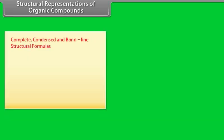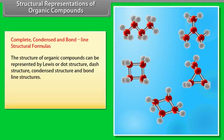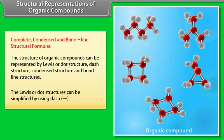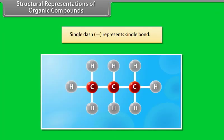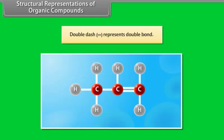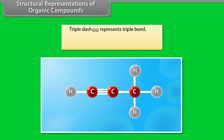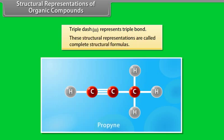Structural representations of organic compounds — complete, condensed, and bond line structural formulas. The structure of organic compounds can be represented by Lewis or dot structure, dash structure, condensed structure, and bond line structures. A single dash represents single bond, for example propane. Double dash represents double bond, for example propene. Triple dash represents triple bond, for example propyne. These structural representations are called complete structural formulas.